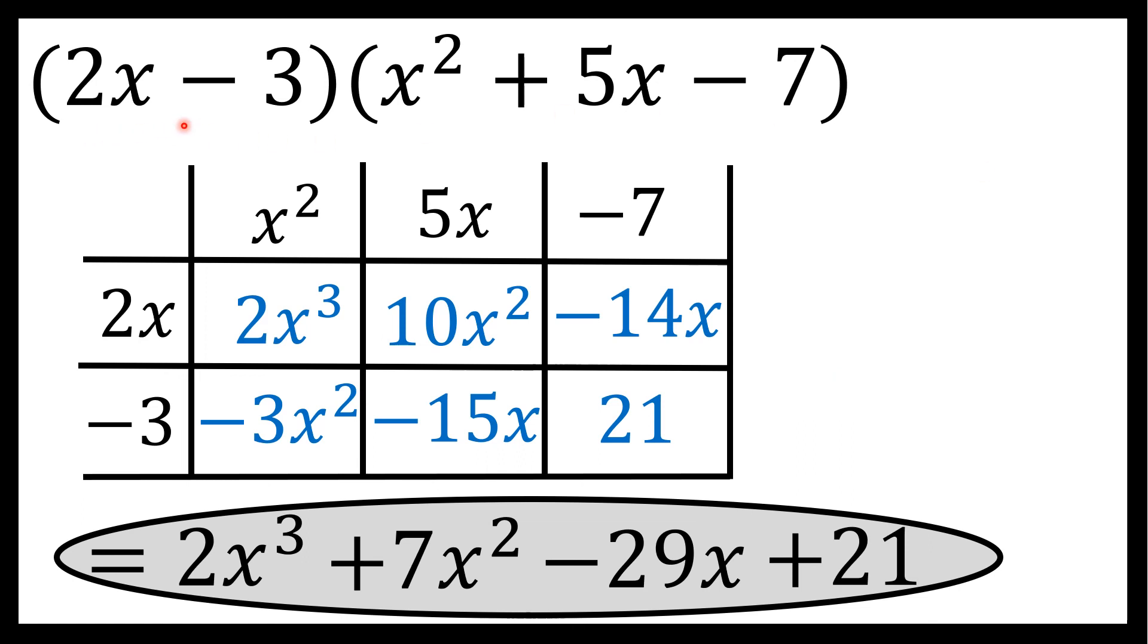The product of 2x minus 3 times x squared plus 5x minus 7 using the lattice method or the box method is 2x to the third plus 7x squared minus 29x plus 21.